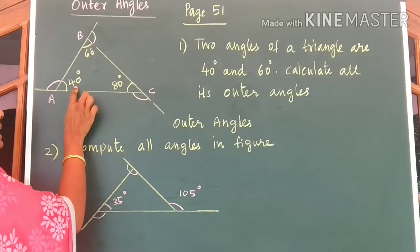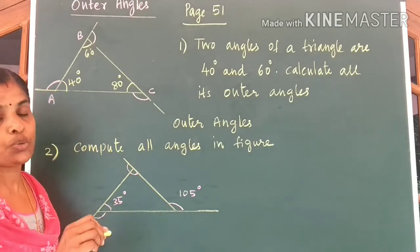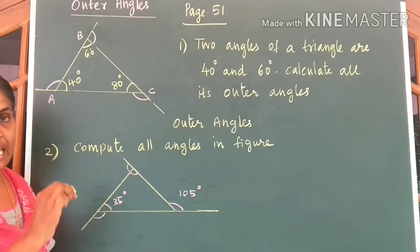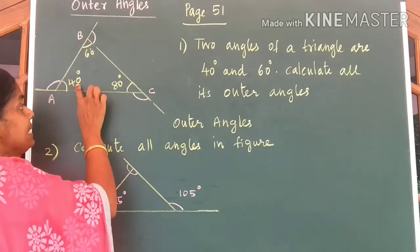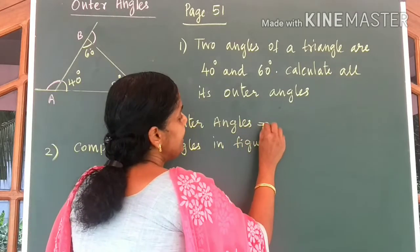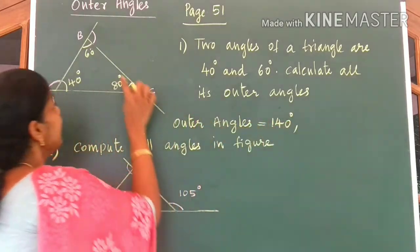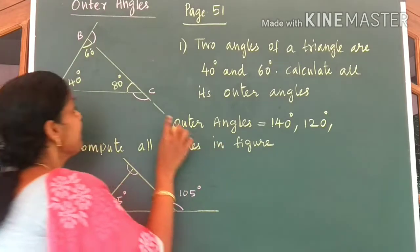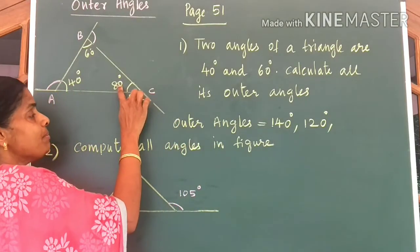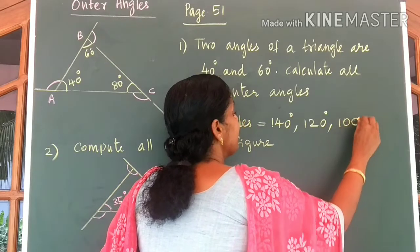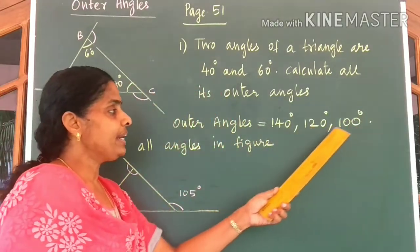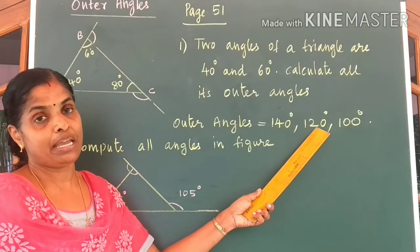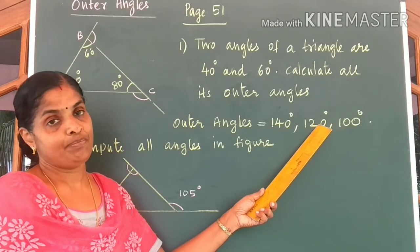Because we know inner angle plus outer angle at each vertex of a polygon forms a linear pair. So outer angle at A would be equal to 180 minus 40, which is equal to 140 degrees. Outer angle at B: 180 minus 60 gives you 120 degrees. Outer angle at C: 180 minus 80 gives you 100 degrees. If you add the three angles, you will find the sum of outer angles of this triangle equals 360 degrees.